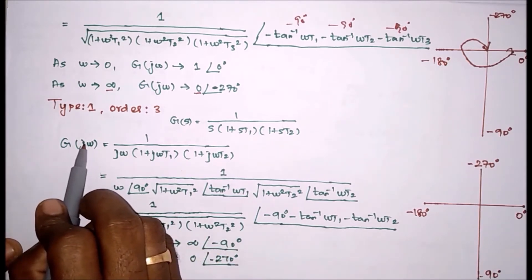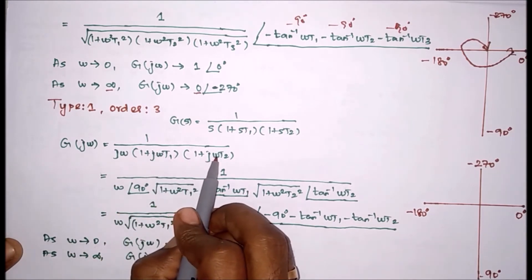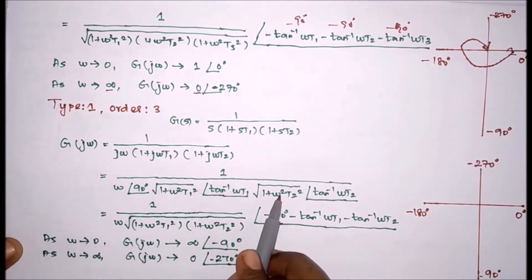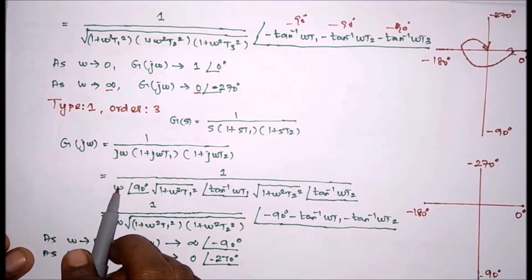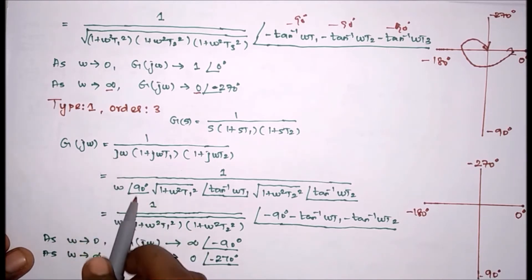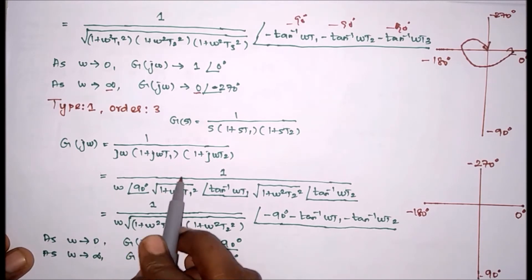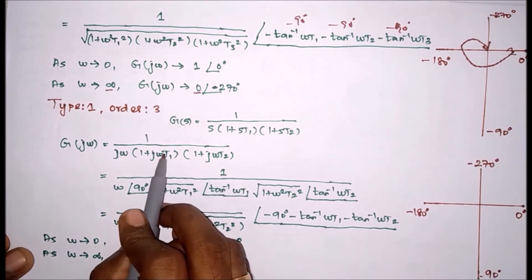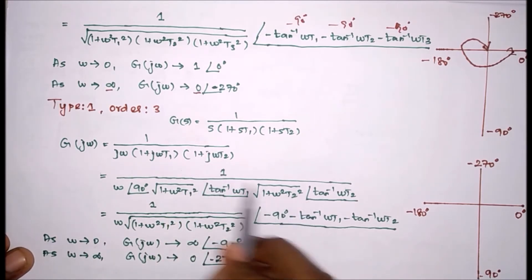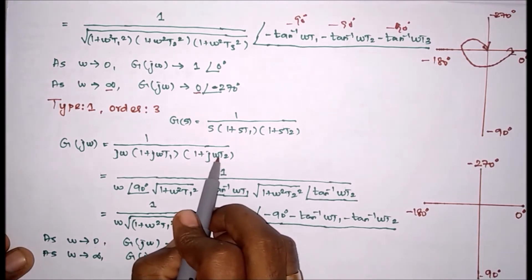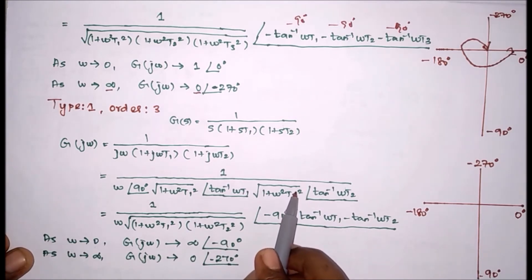We have to substitute S by J omega. This will become J omega, J omega, J omega. We have to find the magnitude and angle separately. For the J omega term, magnitude equals square root of omega squared, which equals omega, and the angle of J omega is 90 degrees. For the next term, magnitude is square root of 1 plus omega squared T1 squared, and angle equals tan inverse of imaginary part divided by real part. For another term, magnitude is square root of 1 plus omega squared T2 squared, and angle equals tan inverse of omega T2 divided by 1. We separate the magnitude and angle.